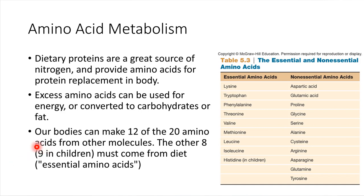In children, there are actually nine of these amino acids that they have to consume in the diet. They can't synthesize. Histidine is the one that kids don't have the metabolic pathway to make it, but adults actually do. So a little bit of a difference there. These amino acids that we have to consume in our diets, these are called essential amino acids. The others, the ones that we can build from other starting ingredients, those are called non-essential amino acids.